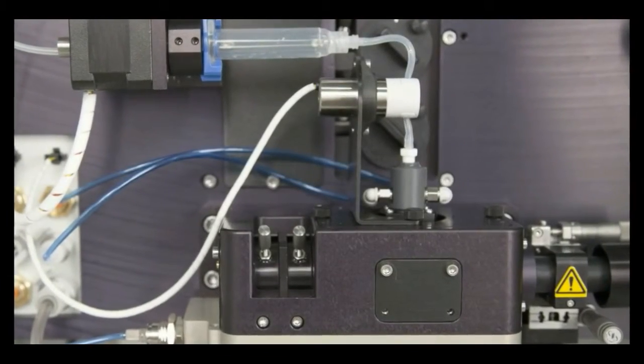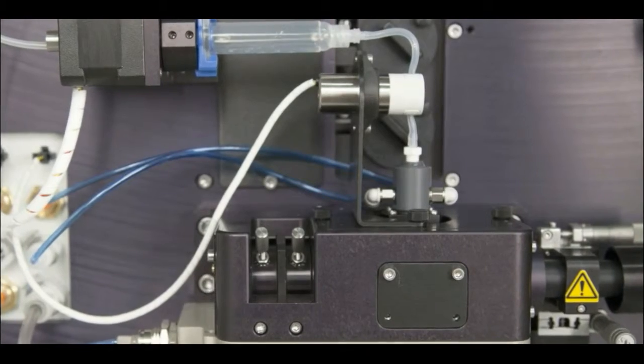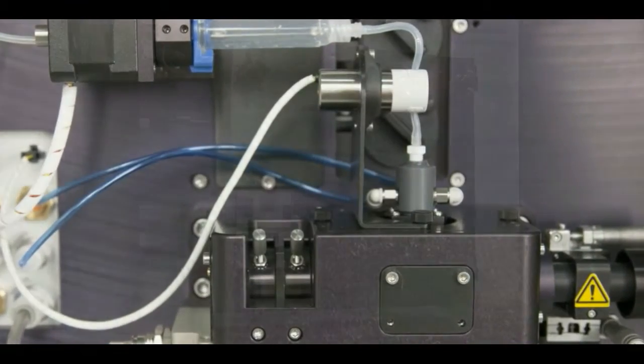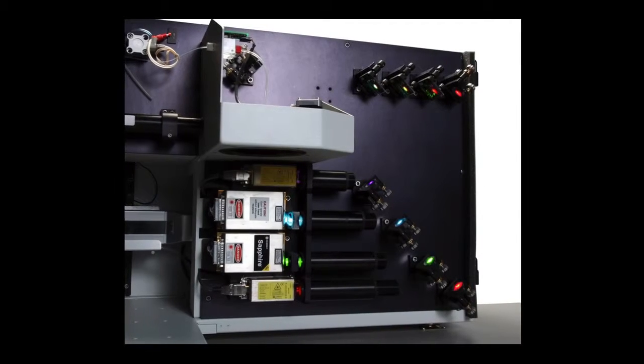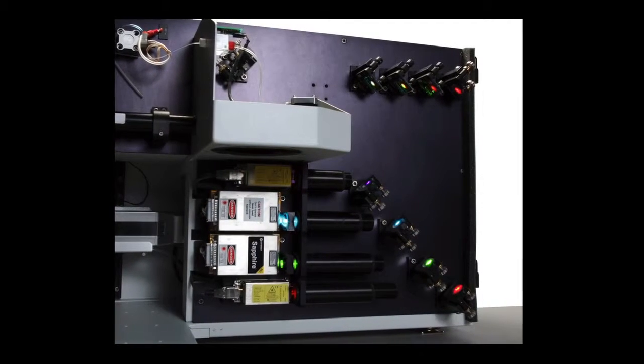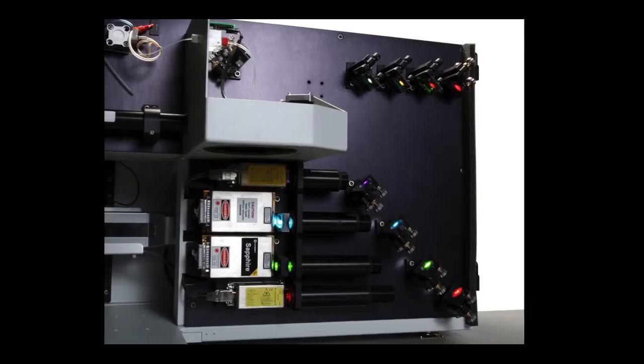Samples are introduced to the flow cell, where they are surrounded by a sheath solution. This hydrodynamically focuses each object at the center of a quartz flow cell, where it is interrogated by up to four lasers, and measurements of size, optical density, and fluorescence are collected for each object.